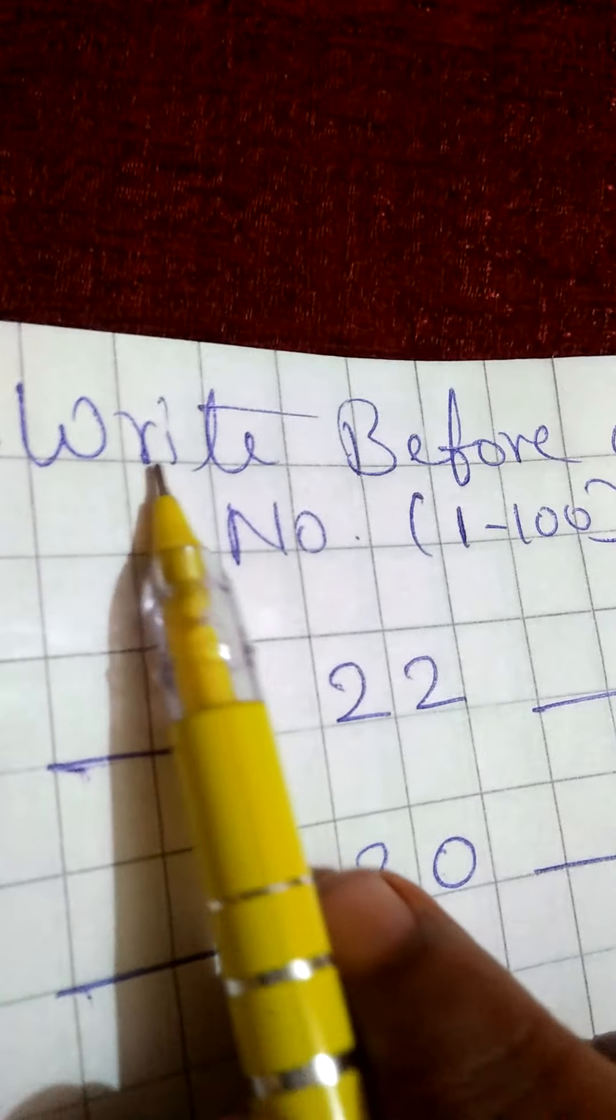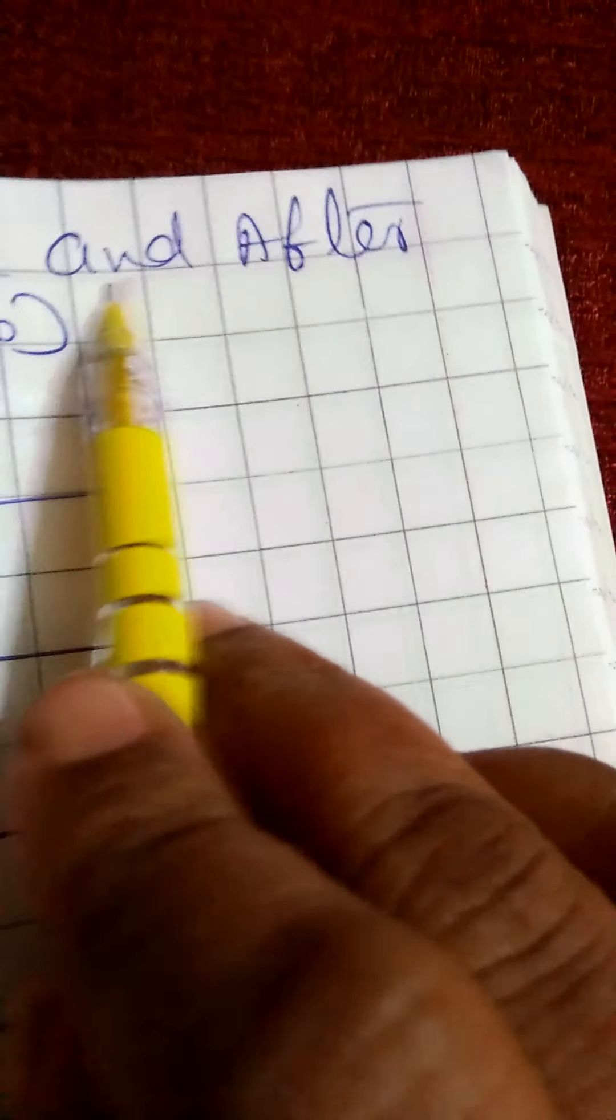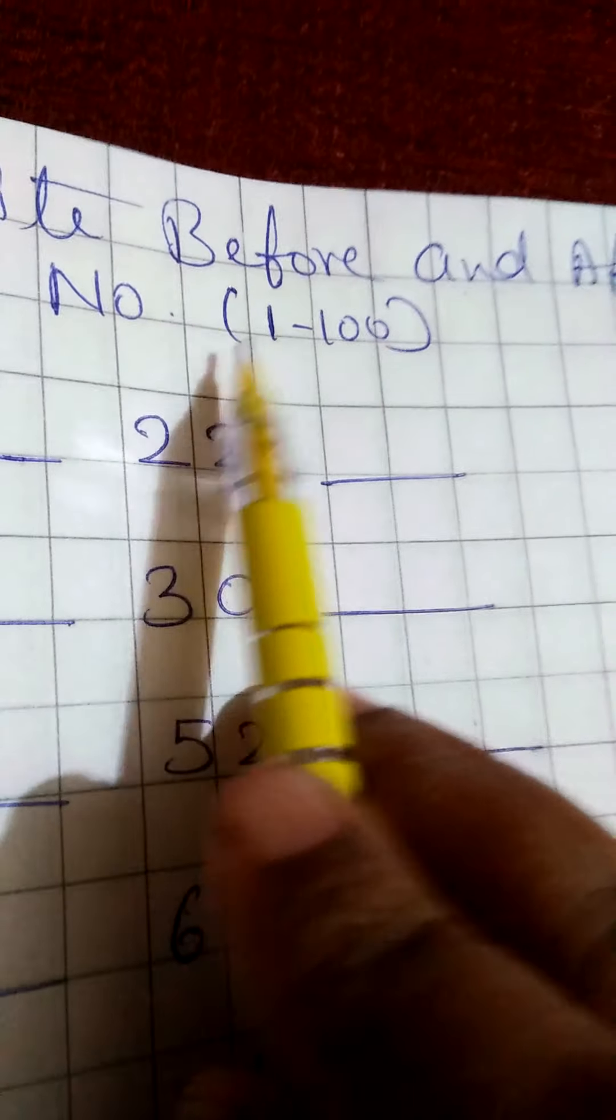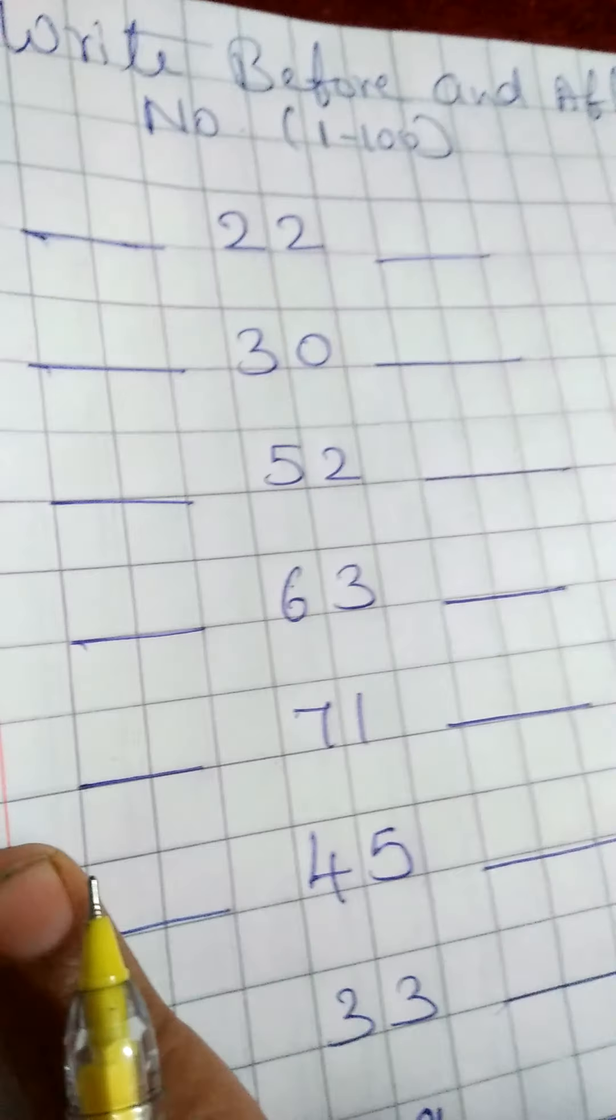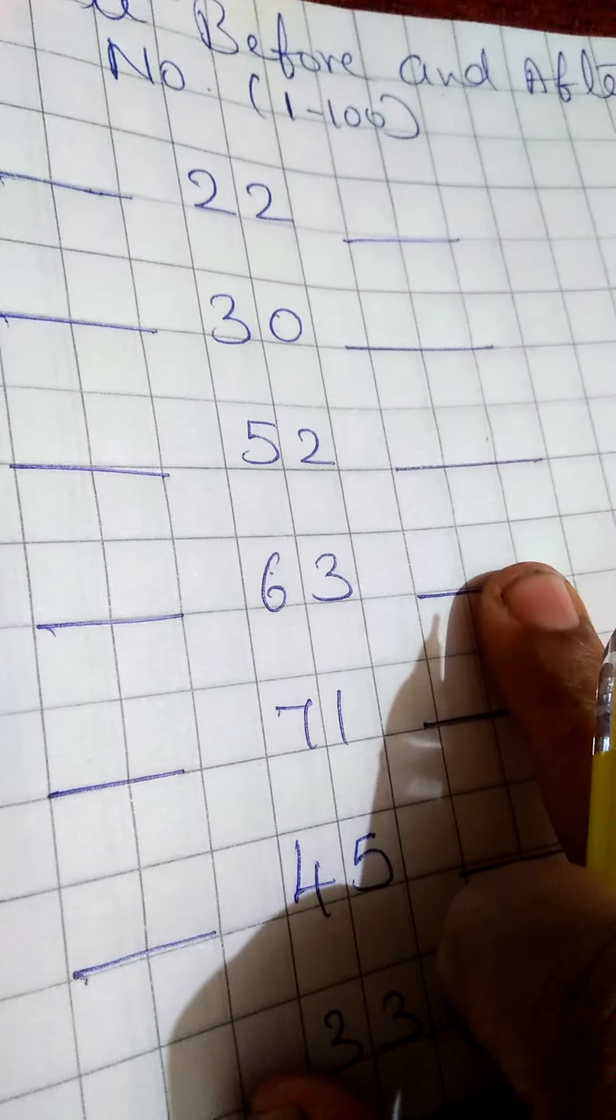See here, write before and after number 1 to 100. Aapko before number likhna hai, aur after number likhna hai.